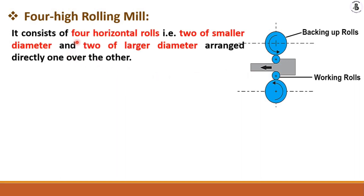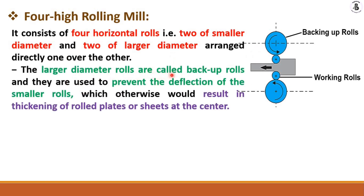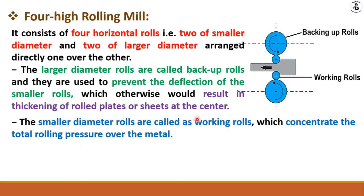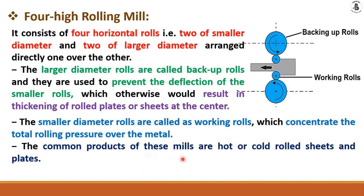Four-high rolling mills consist of four horizontal rolls — two smaller diameter and two larger diameter. The larger diameter rolls are the backup rolls, used to prevent deflection of the smaller rolls, which would otherwise result in thickening of the rolled plates or sheets at the center. The small-diameter rolls are the working rolls, concentrating the rolling process on the metal. Common products are hot or cold rolled sheets and plates.